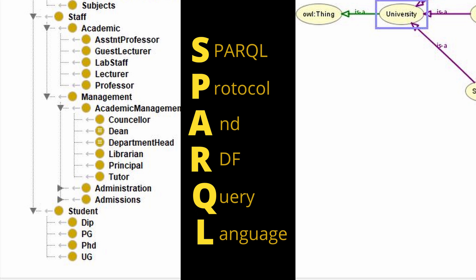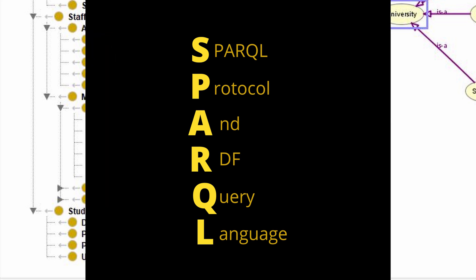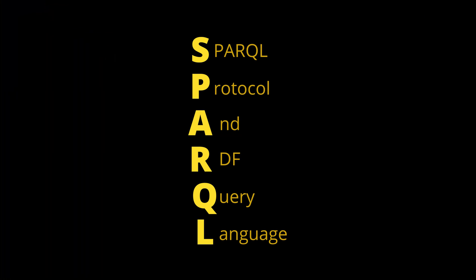SPARQL is a recursive acronym that stands for SPARQL Protocol and RDF Query Language, that is able to retrieve and manipulate data stored in RDF format. It was made a standard by the RDF Data Access Working Group of the W3C and is recognized as one of the key technologies of the semantic web.